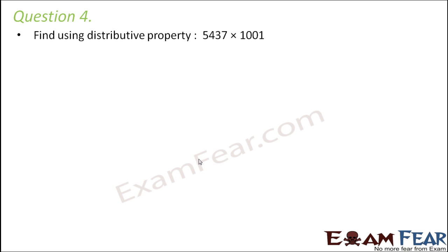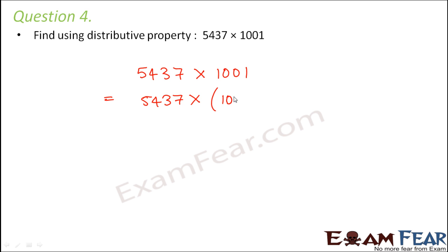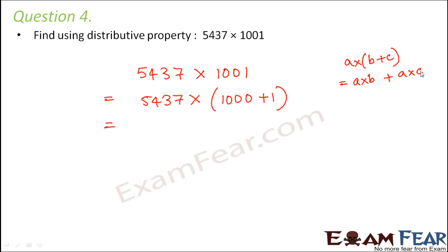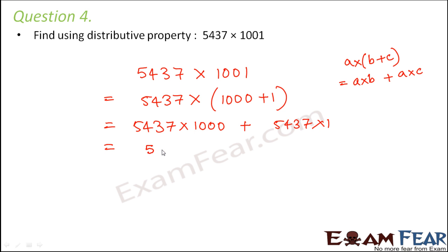Question number four: find using distributive property 5437 multiplied by 1001. We can break 1001 as 1000 plus 1. By distributive property, a into (b plus c) equals a into b plus a into c. So we can write 5437 into 1000 plus 5437 into 1.